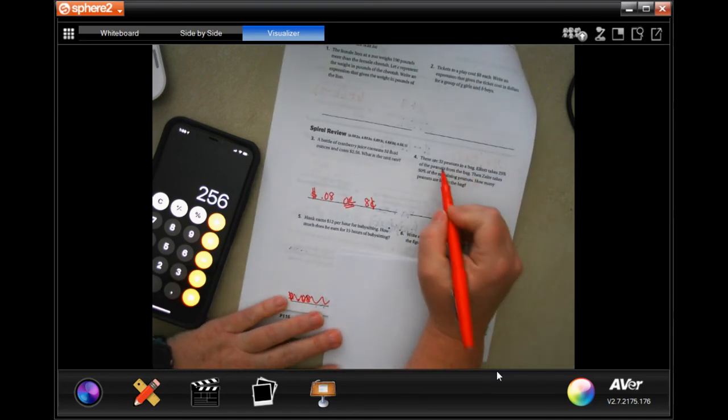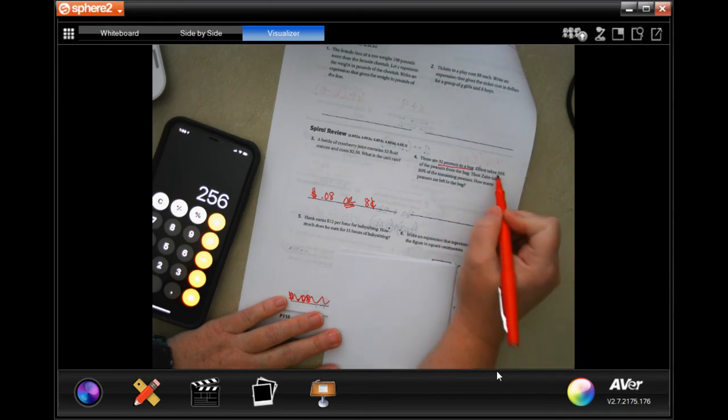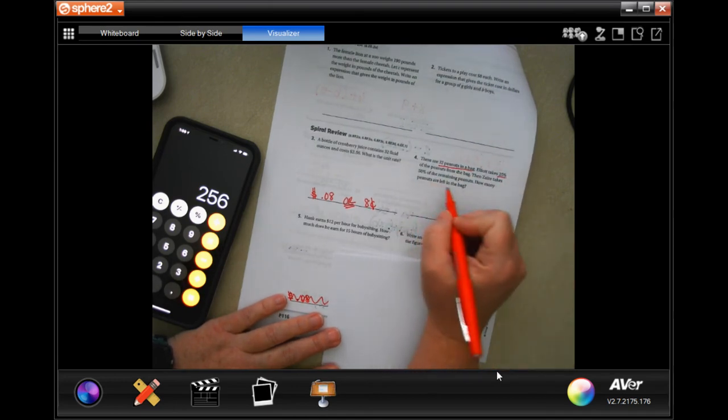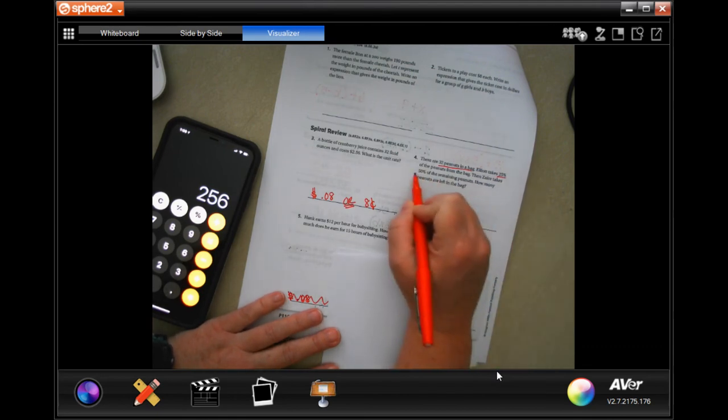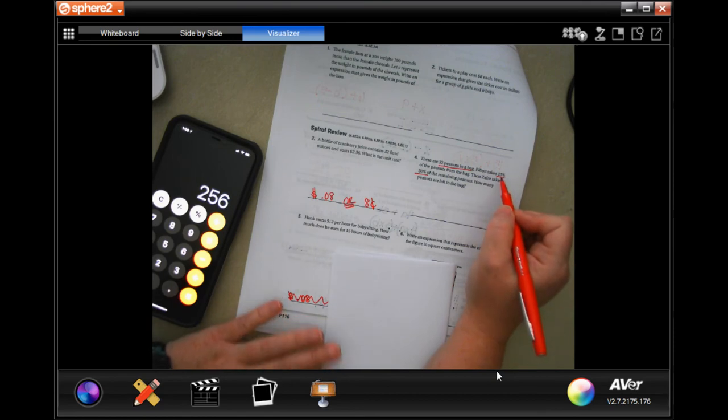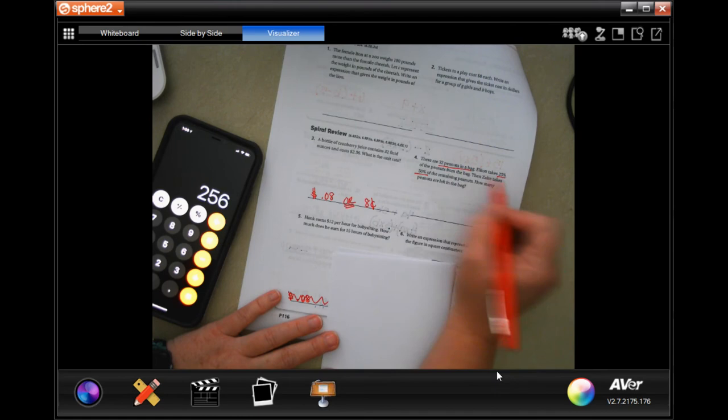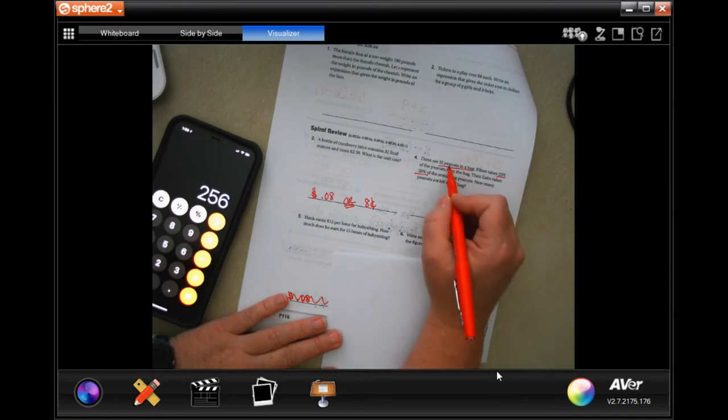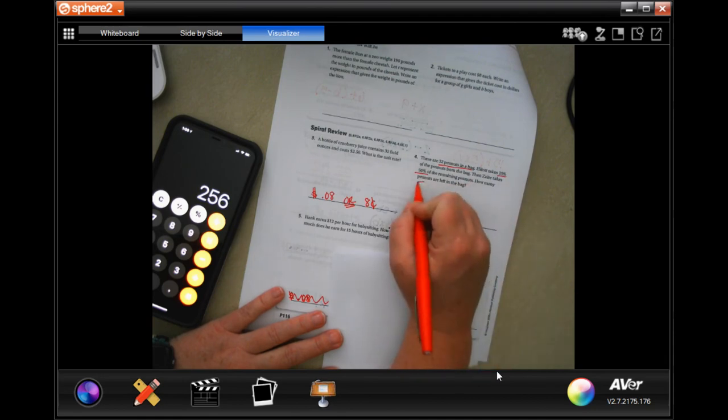There are 32 peanuts in a bag. Elliot takes 25% of the peanuts from the bag. There takes 50% of the remaining peanuts. How many peanuts are left? Well, I know if there's four, if I broke 32 up into four, because there's four times 25 equals 100%. So if I divide 100% by four, I get 25. Let's divide 32 by four. So that's going to be eight.